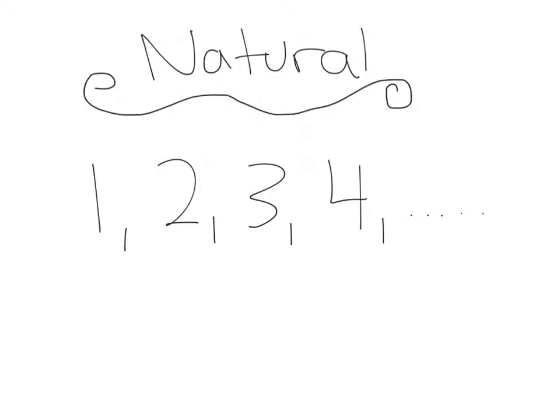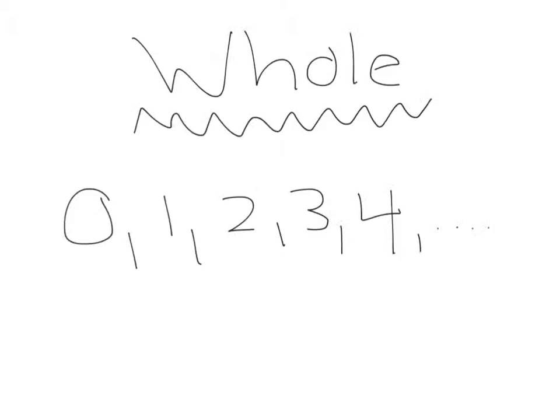Then, those natural numbers evolved into whole numbers. Whole numbers were the same as natural, except they had this 0. So they started out with 0, 1, 2, 3, 4, and so on.